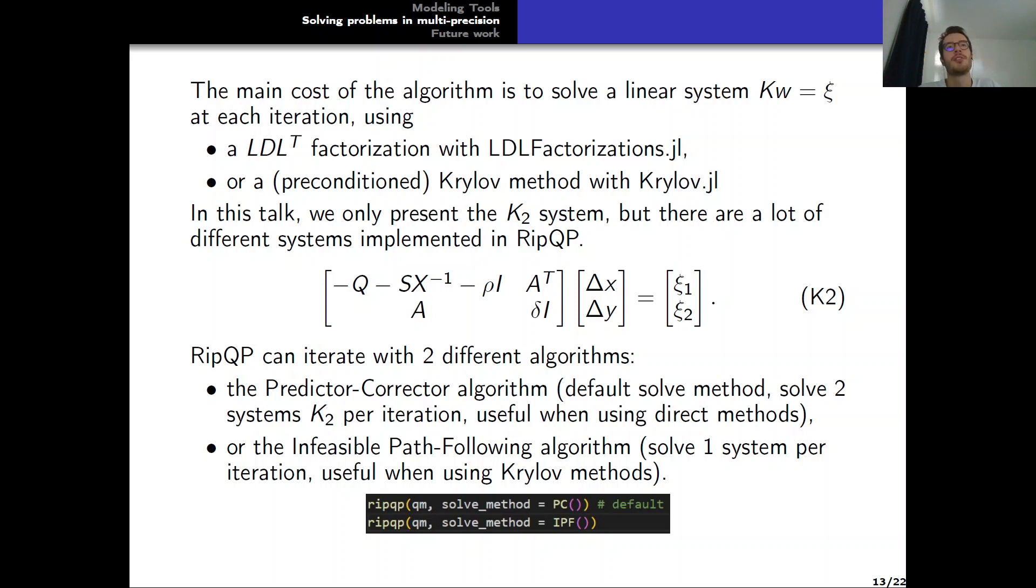RipQP can iterate with two different algorithms, the predictor-corrector algorithm, which is the default algorithm, which solves two K2 systems per iteration, which is very useful when using direct methods because the main cost is to perform the factorization and then the solves are inexpensive, usually. And it is also possible to use the infeasible path-following algorithm, which solves one system per iteration, and is useful when you want to use Krylov methods, because with Krylov methods it's the solve of the system which is the most expensive, if you don't have any preconditioner or a cheap preconditioner.